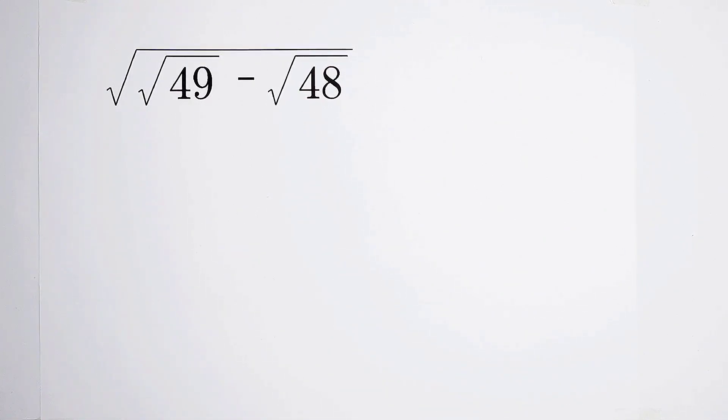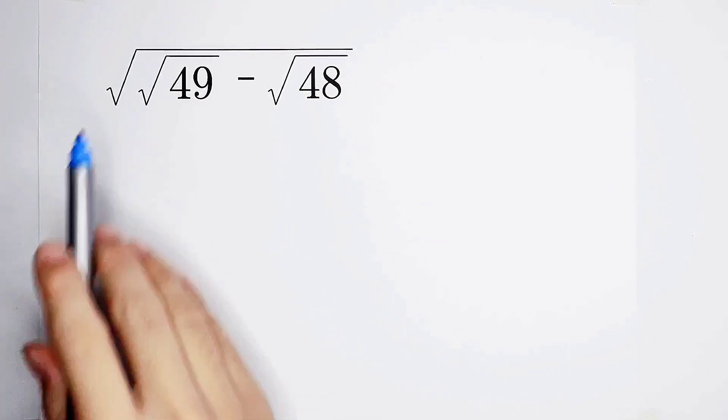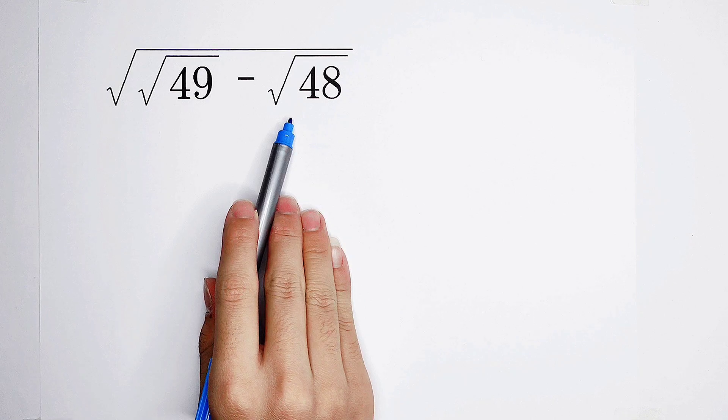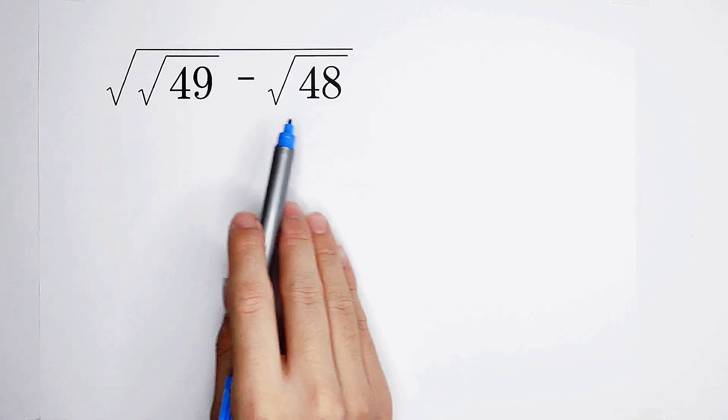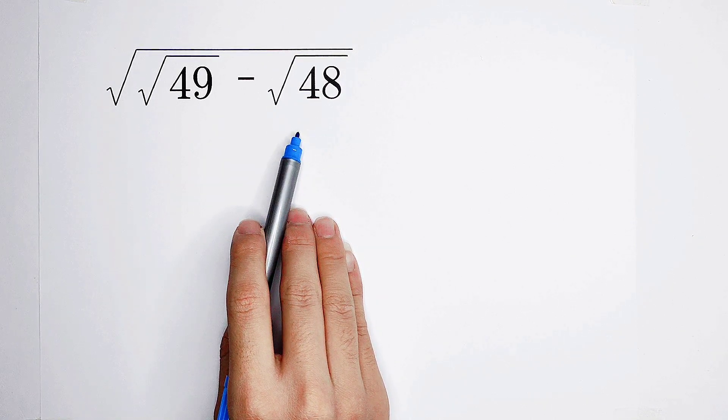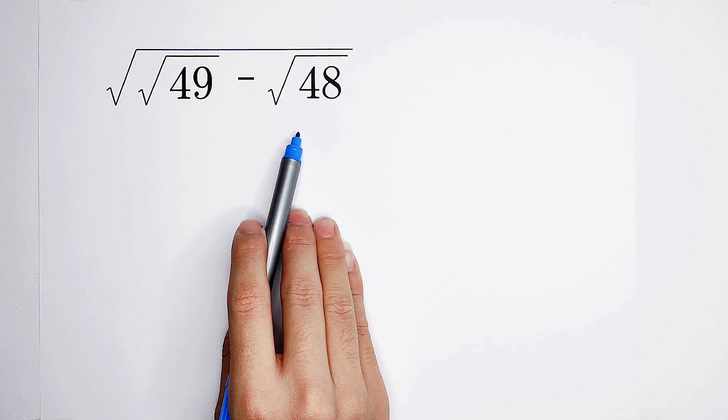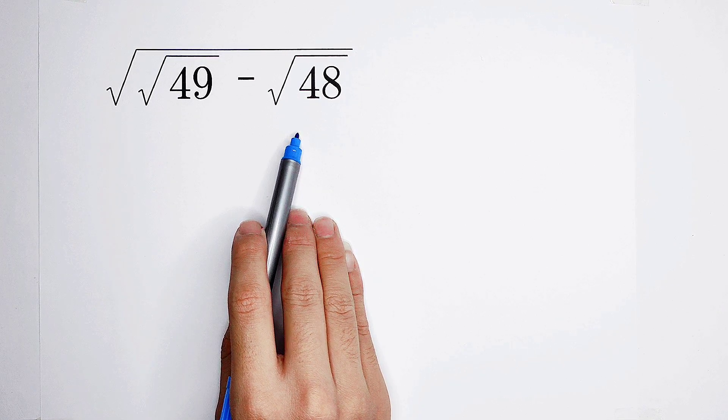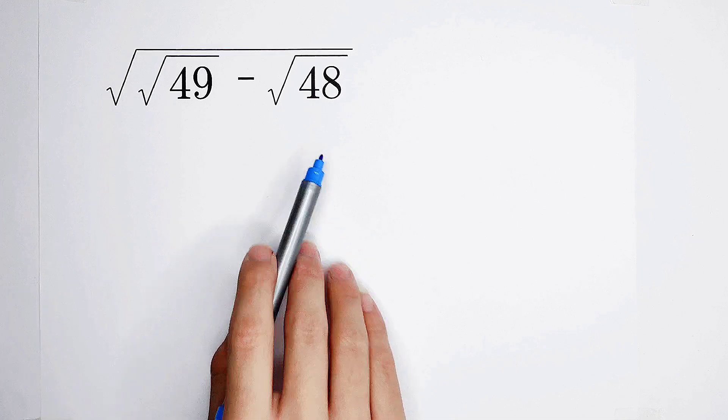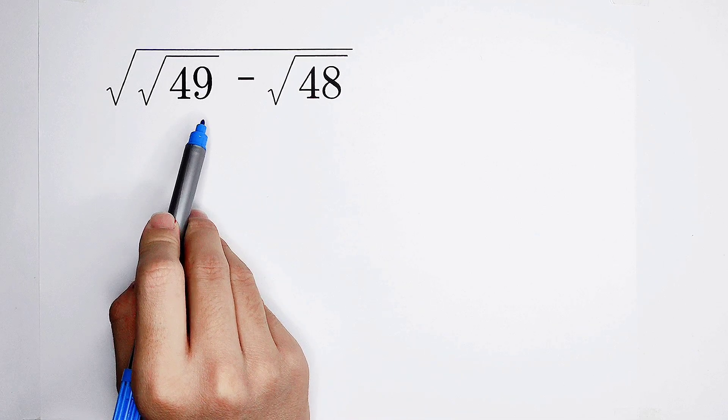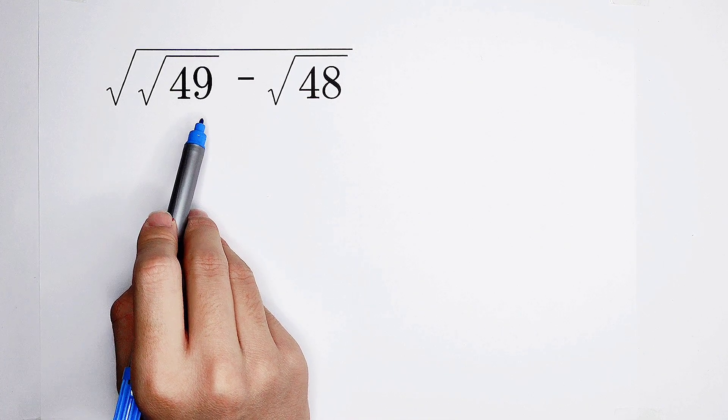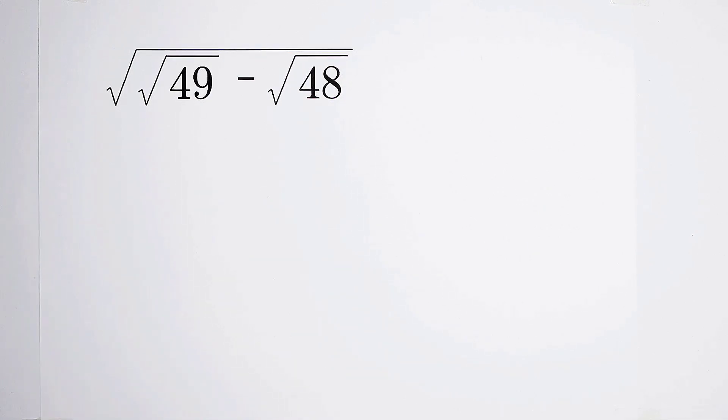What shall we do first? Firstly, let's have a look at these two guys. Observe, square root of 49 and square root of 48. Very good, I've noticed. Of course, you should have noticed that square root of 49 is an integer, because 49 is a perfect square. It is 7 squared.